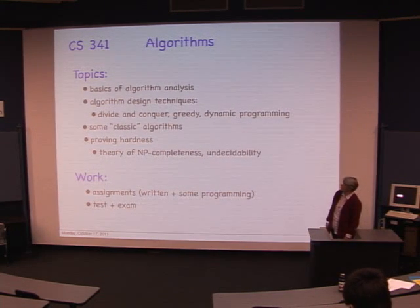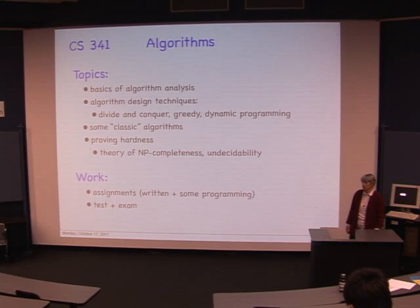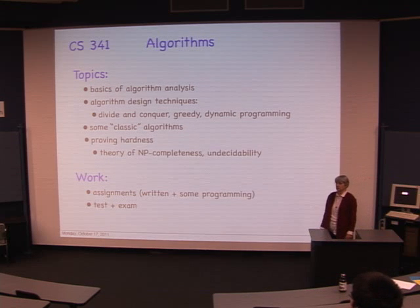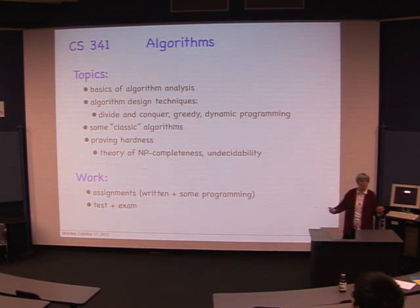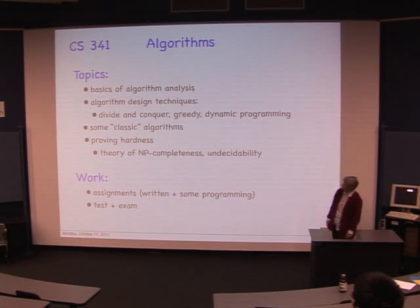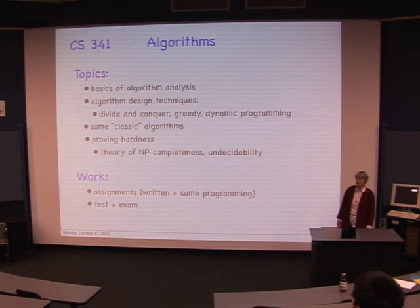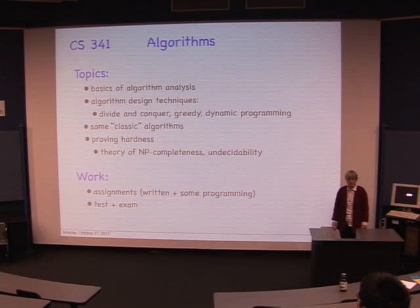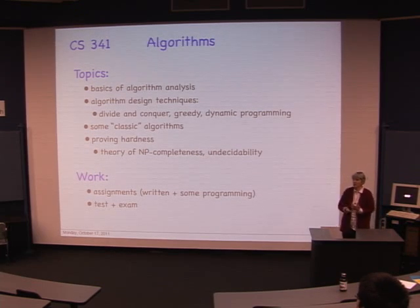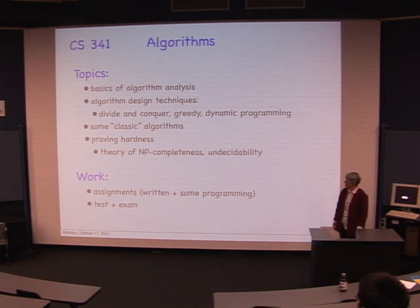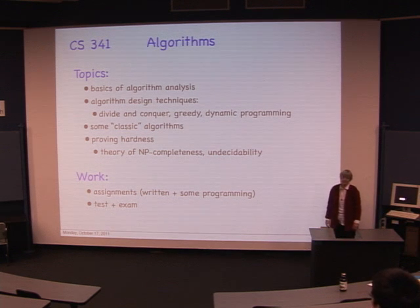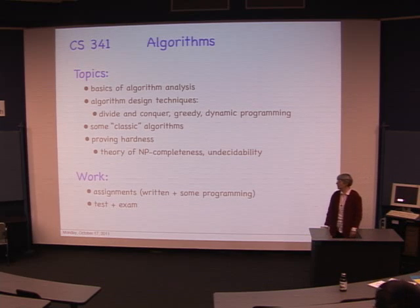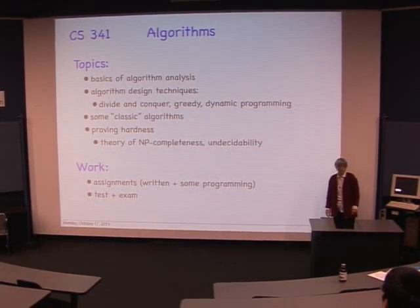The topics covered in this course include the basics of algorithm analysis — why we do a theoretical analysis of how our algorithm behaves as inputs get larger, rather than just running test examples. Some algorithm design techniques: divide and conquer, the greedy technique, and dynamic programming, which is very handy and something everyone should know. We also study classic algorithms every computer scientist should have in their repertoire, and then problems we can't seem to find efficient algorithms for — the theory of NP-completeness and undecidability.